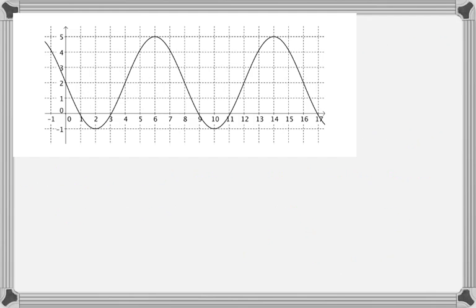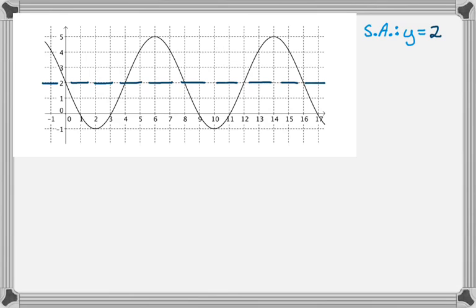Let's do a problem. Here is a graph and we need to figure some stuff out. The first thing is the sinusoidal axis — in this case I can just look and see, so my sinusoidal axis is y equals 2. Remember, that's d for our equation. The next thing is the amplitude: from the sinusoidal axis to the maximum is 3, so the amplitude is 3.